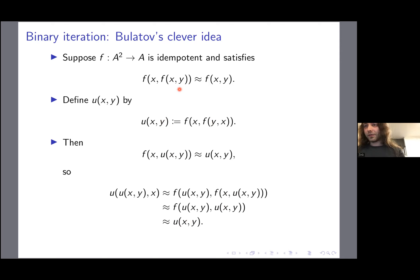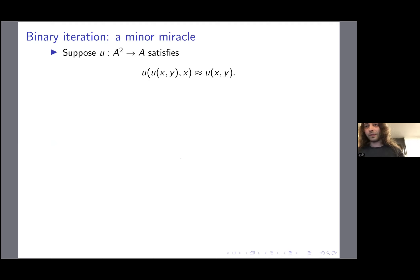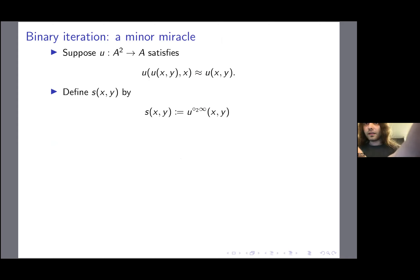So we started with something satisfying the first identity obtained by iteration, and we get something satisfying the second identity — but probably no longer satisfying the first. It is not clear we have made progress. Here is the second bit of magic. Suppose we have a two-variable function satisfying the second identity. We directly jump to a partial semilattice operation just by again iterating this two-variable operation U on its second variable.